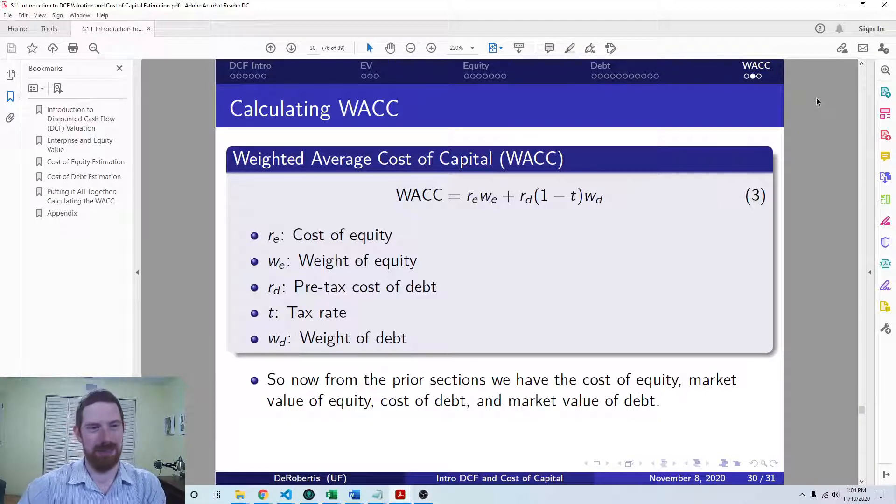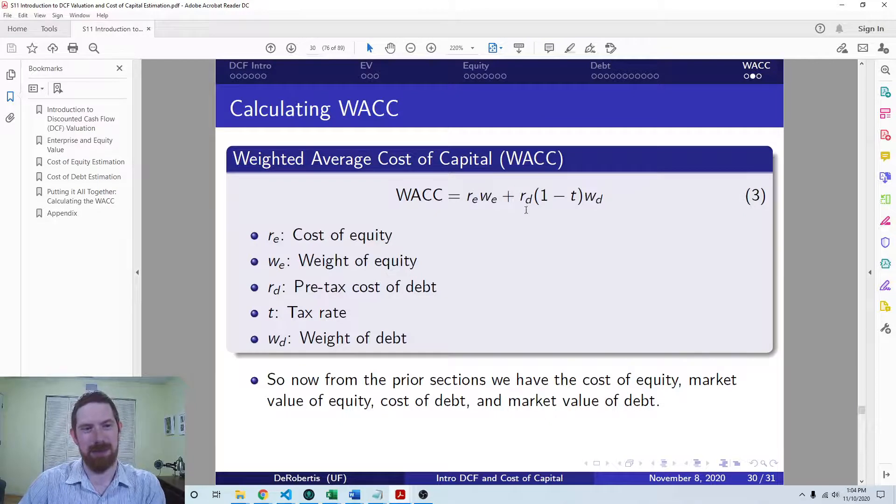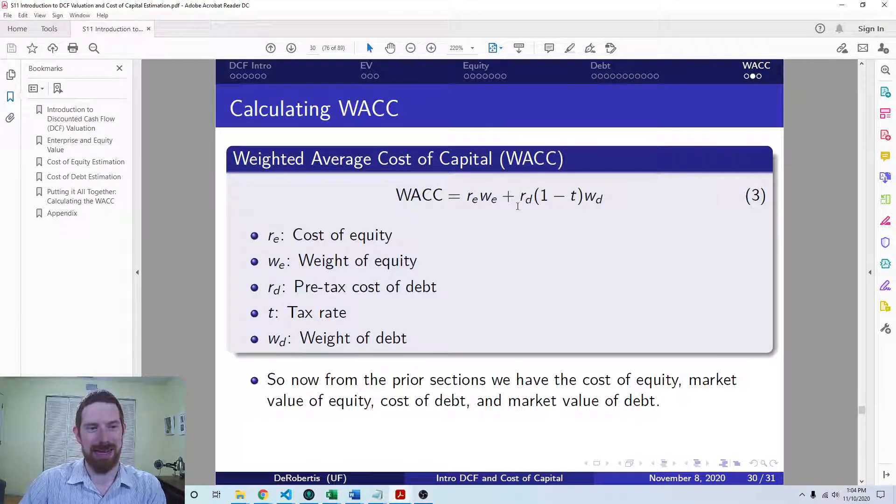And you just take each cost of capital and multiply it by the weight of that capital in the capital structure. And for any debt components, you're going to want to make sure that you use the after-tax cost of debt. So that's taking the pre-tax and multiplying by one minus the tax rate.